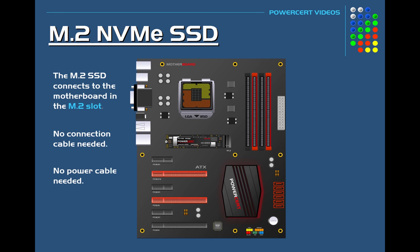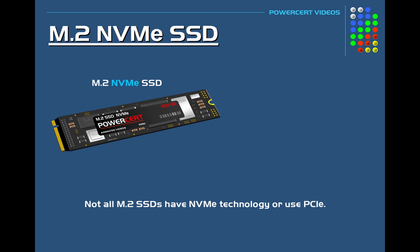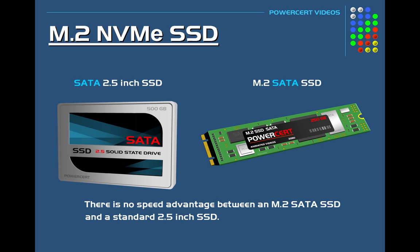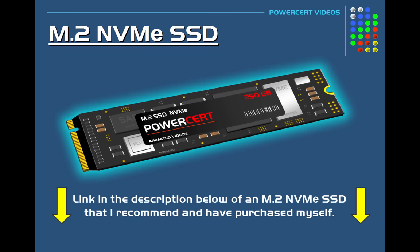Not all motherboards have an M.2 slot, since this is a relatively new technology. So if you want to use an M.2 NVM Express SSD, you need to make sure your motherboard has an M.2 slot and supports NVM Express technology. It's also important to note that not all M.2 SSDs use NVM Express or the PCI Express bus — some M.2s use the SATA bus, which is much slower. There is actually no speed advantage between an M.2 SATA SSD and a standard 2.5 inch SSD, so be sure before purchasing. A recommended M.2 SSD is linked in the video description.